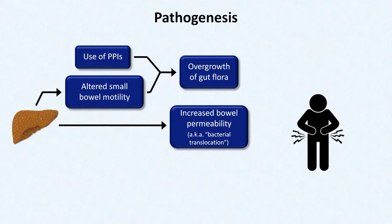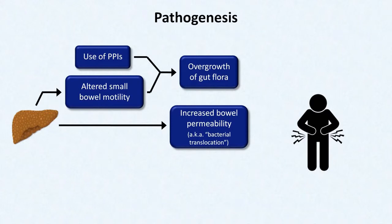This does not mean that the bacteria literally seep through the bowel wall directly into the surrounding ascitic fluid. Instead, bacteria work their way into the lymphatics and travel to mesenteric lymph nodes. Once in the lymph nodes, there are several mechanisms as to how the bacteria physically get into the ascitic fluid, all of which are speculative.